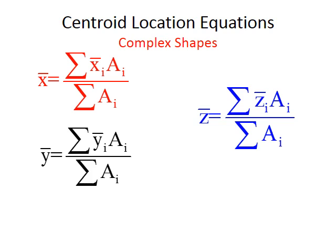The Greek symbol sigma represents summation. On top we have x-bar sub i times A sub i, all over the summation of all the areas. In our example of a square and semicircle, let's call the square one. We would have x₁ times A₁, where x₁ is the centroid location of the square times the area of the square.